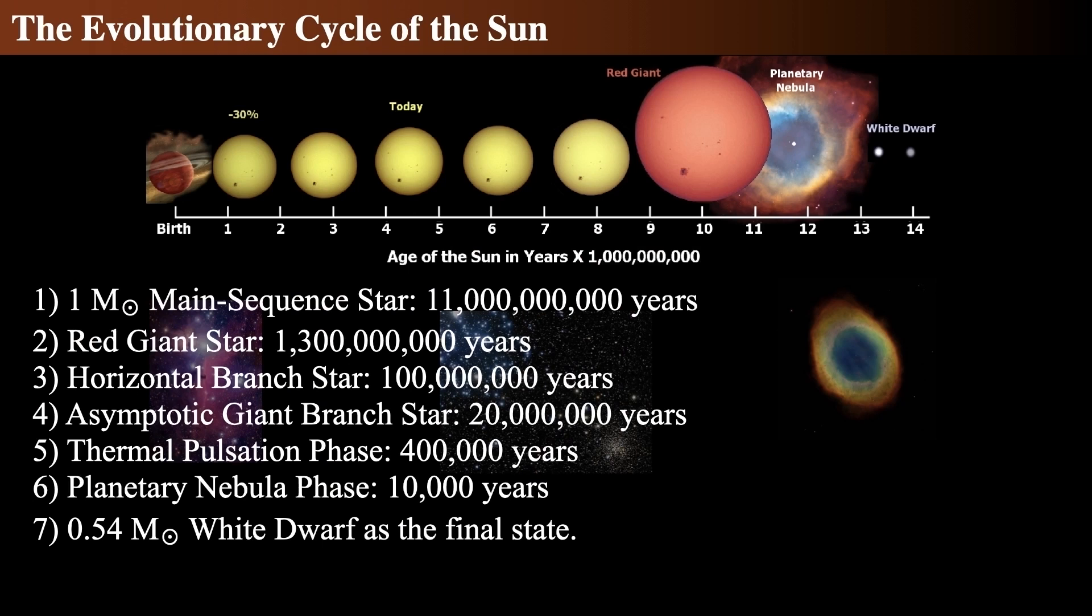Then it becomes a horizontal branch red giant star for about 100 million years, in which it's stably burning helium. As it runs out of helium, it rises in luminosity to become an asymptotic giant branch star for about 20 million years. At this point, the helium has run out and it sputters like a car with an empty tank and pulses itself apart over about a half a million years, with the outer envelope all becoming a planetary nebula, which dissipates away after about 10,000 years.